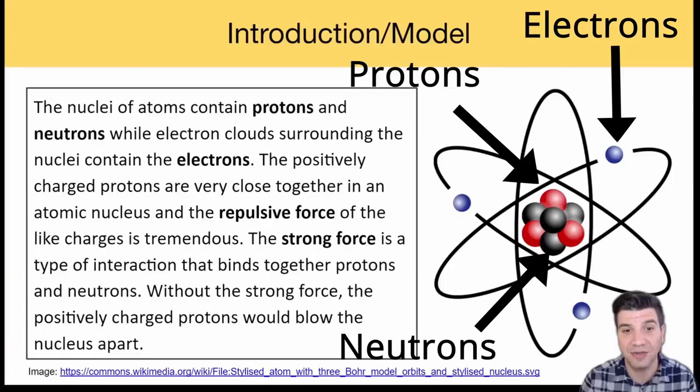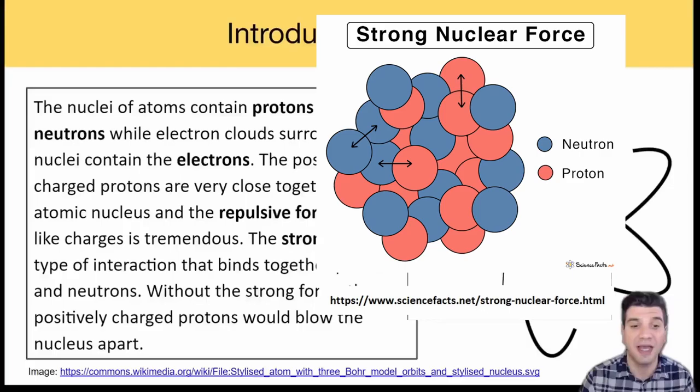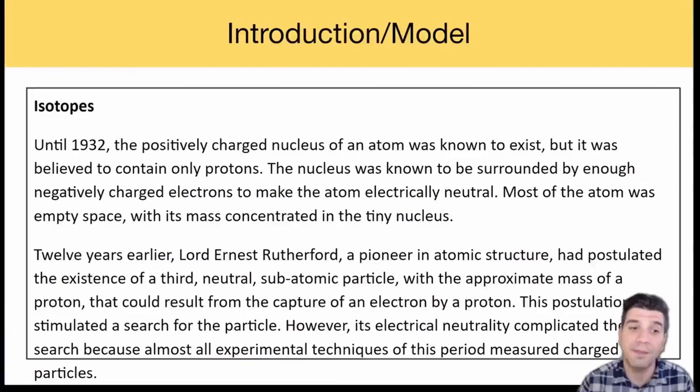The nuclei of atoms contain protons and neutrons while electron clouds surrounding the nuclei contain the electrons. The positively charged protons are very close together in the atomic nucleus and the repulsive force of the charges is tremendous. The strong force is a type of interaction that binds together protons and neutrons. Without the strong force, the positively charged protons would blow the nucleus apart.